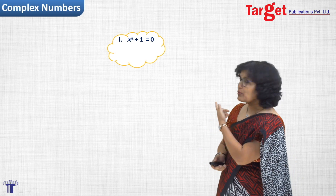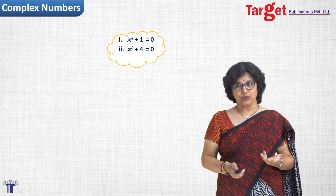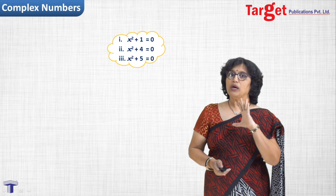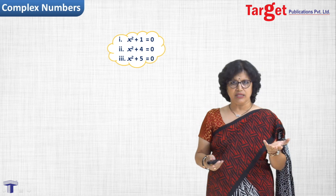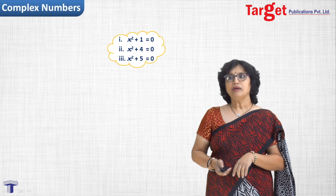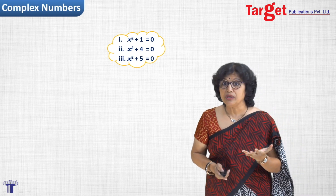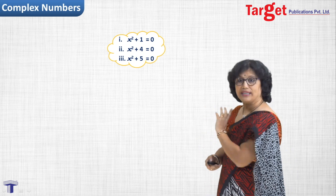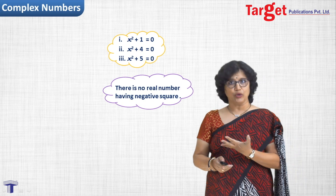Consider the first equation as x squared plus 1 equal to 0, another equation as x squared plus 4 equal to 0, and the third equation as x squared plus 5 equal to 0. These look like very simple quadratic equations and we have already seen how to solve them. But please look at those equations closely — do we have any real solution to these equations? We realize that there is no real number whose square can be a negative quantity.